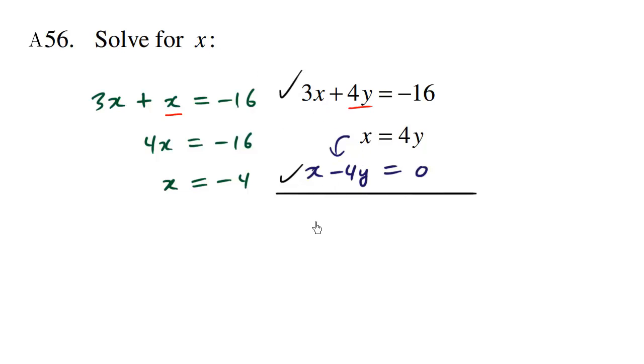3x plus x is 4x. Positive 4y added with negative 4y becomes nothing, 0, equals negative 16 plus 0, which is negative 16. So we're combining both equations, and we have the same result.